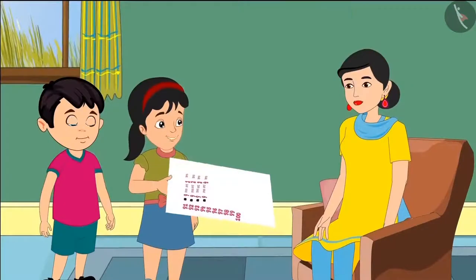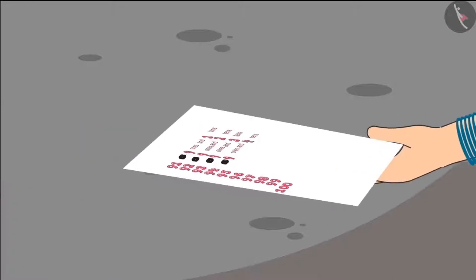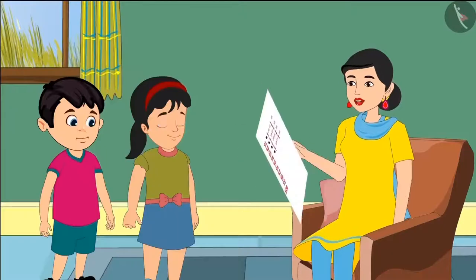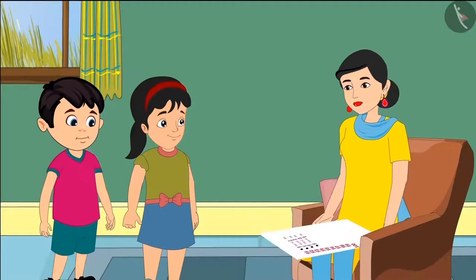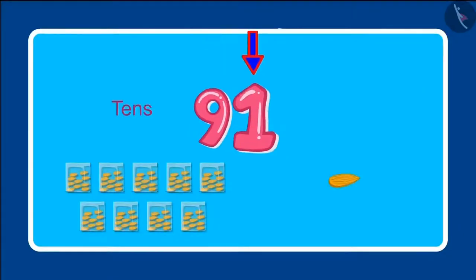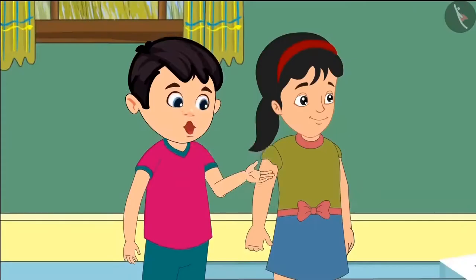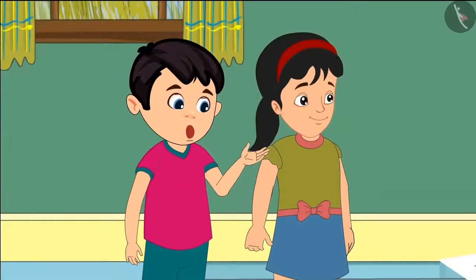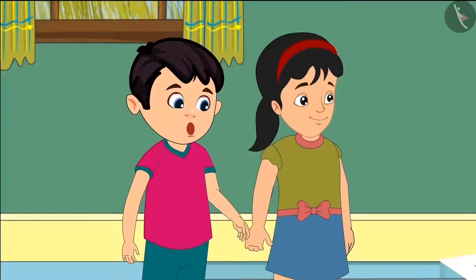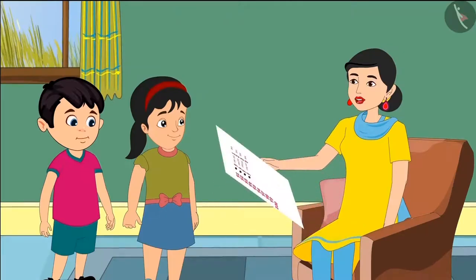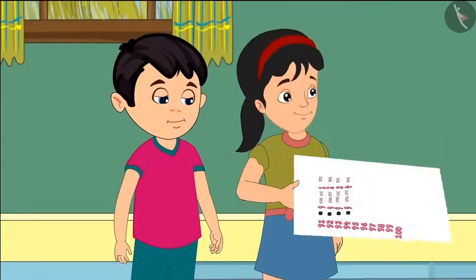"Mommy, look — we are preparing this chart to put in class!" "Hey children, you have written it upside down! We write 91 like this, and there are nine tens and one ones in it — that means nine bundles of ten and one loose." "Oh yes, we have made this mistake in all the numbers. Take this and just fix it up." "Okay, mommy!"